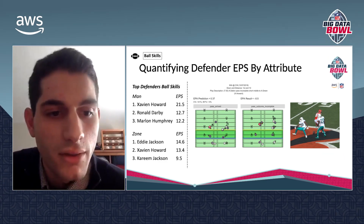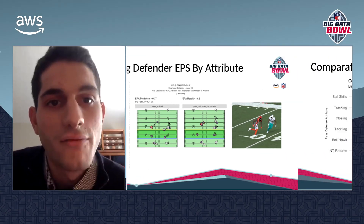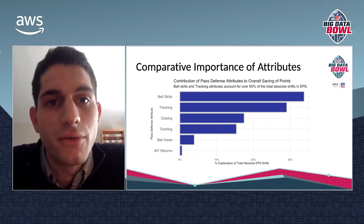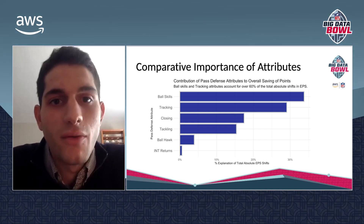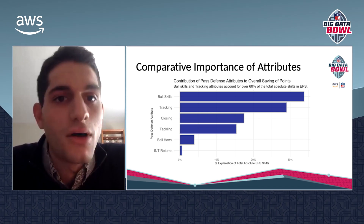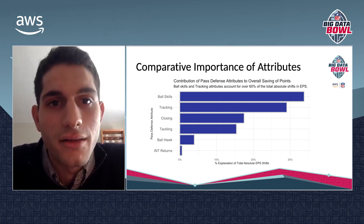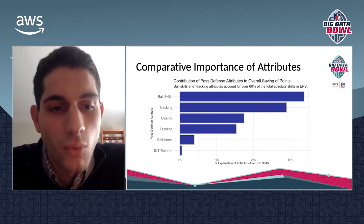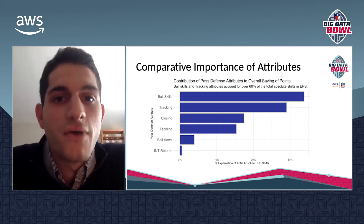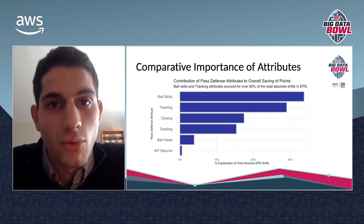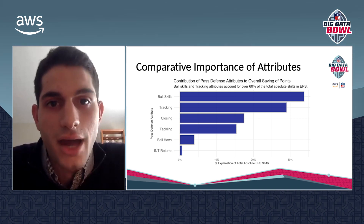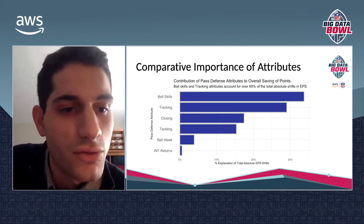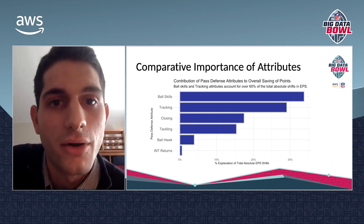To wrap it up we looked at these attributes at a high level and were able to summarize the relative importance of these attributes in terms of a defense's ability to save points. We did that by looking at all of the EPA shifts across all plays over the entirety of the 2018 season and seeing what percent of that shift each attribute was responsible for. What we found was that ball skills was the most important attribute, closely followed by tracking ability, which together made up over 60% of the EPA shifts — showing that those two attributes are relatively important compared to the rest.